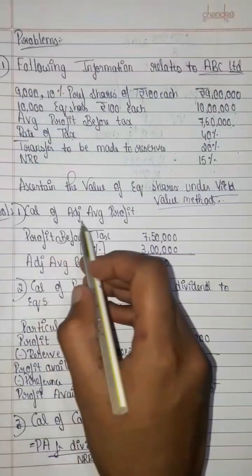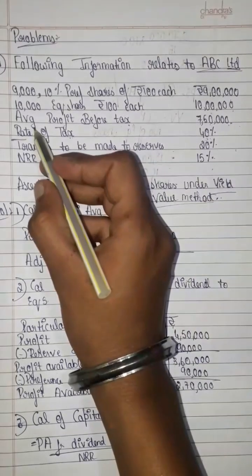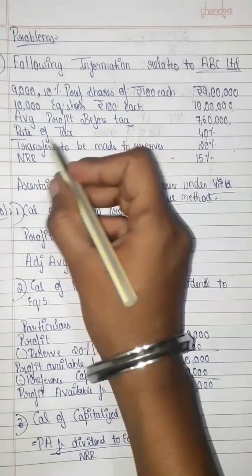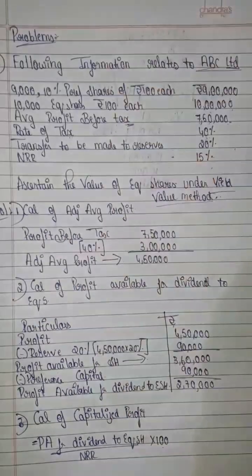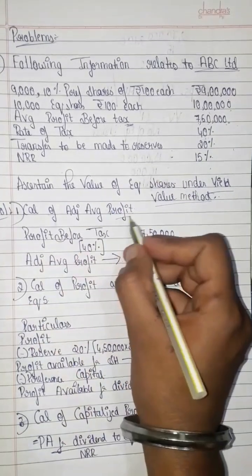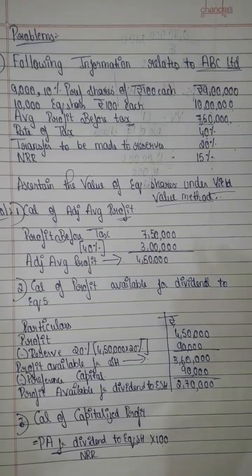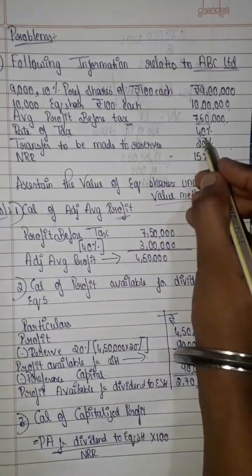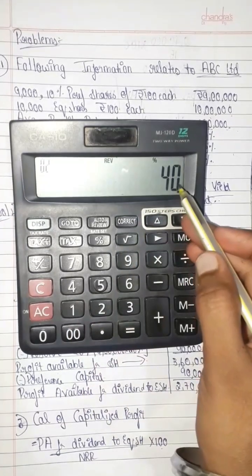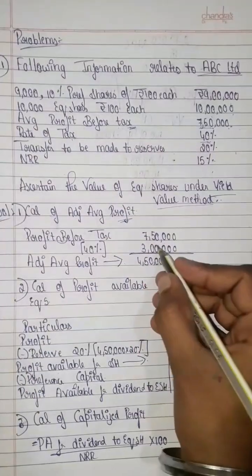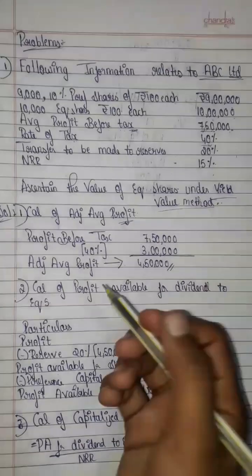Step 1: Calculation of adjusted average profit. Profit before tax is 7,50,000. Rate of tax is 40%, so tax amount is 7,50,000 × 40% = 3,00,000. Therefore, adjusted average profit is 7,50,000 minus 3,00,000 equals 4,50,000. This is the step 1 answer.